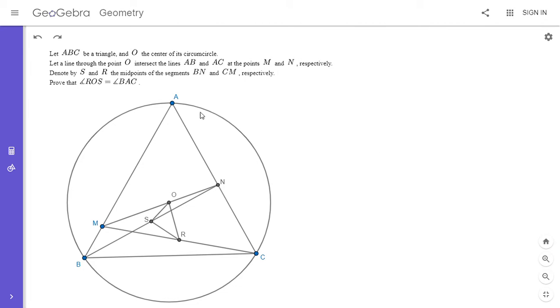We have triangle ABC with circumcenter O. A line through O intersects AB and AC at M and N. S is the midpoint of BN, R is the midpoint of CM. We want to show that angle ROS equals angle BAC.